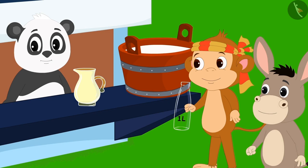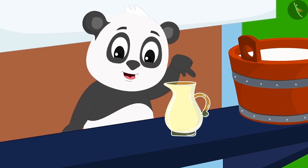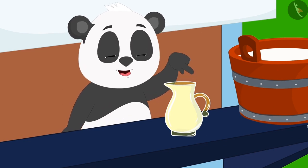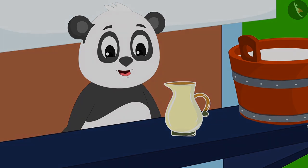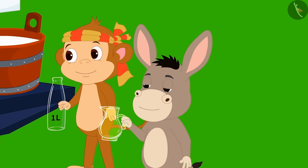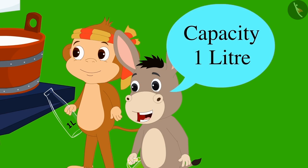Golu explained to Bholla, Look Bholla, if this jug was completely filled with one litre of milk, what does it mean? Bholla immediately replied, This means the capacity of this jug is one litre.